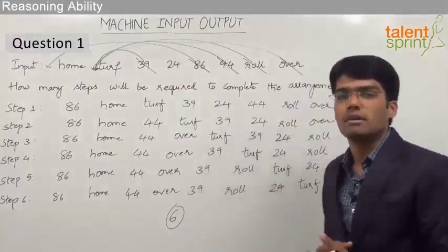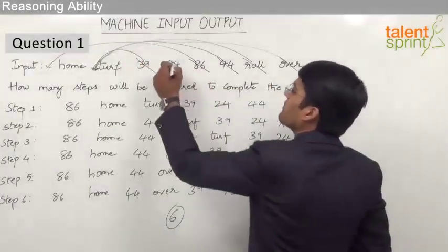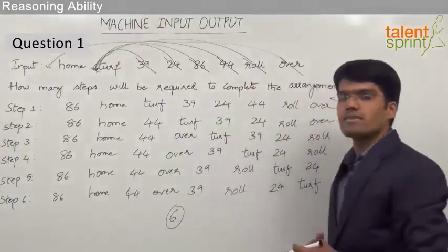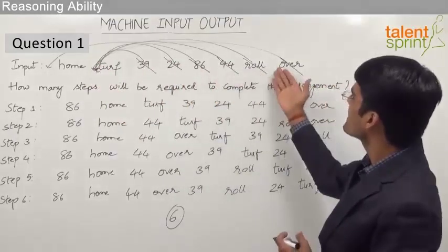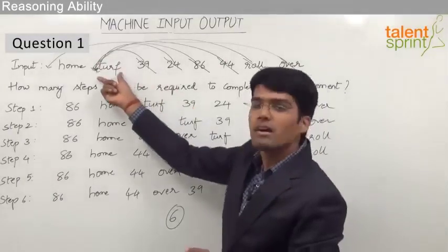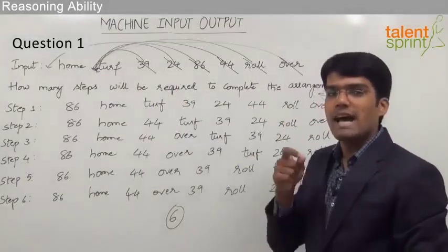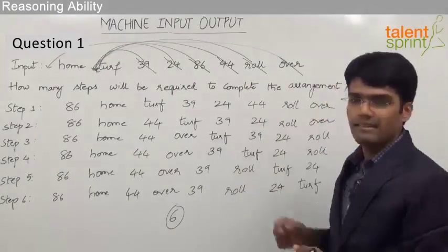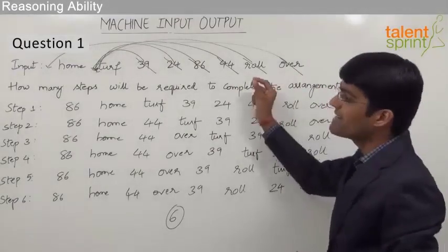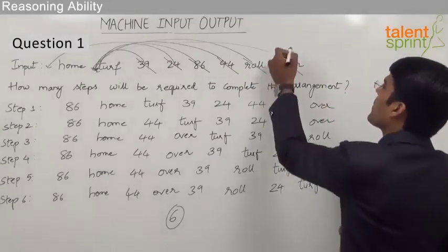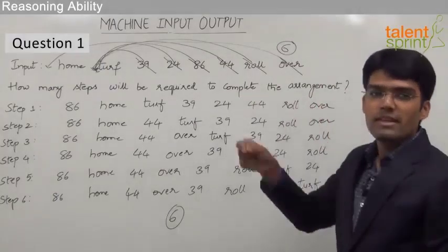After moving roll, we need a number, and that number has to be 24 as the remaining three numbers have already been placed. Strike off 24 and draw an arrow showing it has gone before turf. After placing 24, the only element left is turf, and all other elements have gone to their correct positions. Turf comes to its correct position automatically, so there is no need to cancel it. The answer is obtained by counting the number of elements cancelled in the given input: 1, 2, 3, 4, 5, and 6. Total 6 movements are required, so the answer is 6 steps.